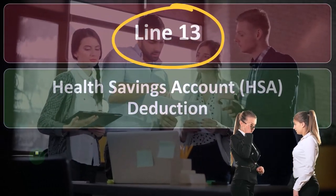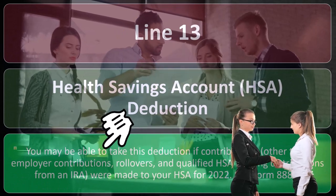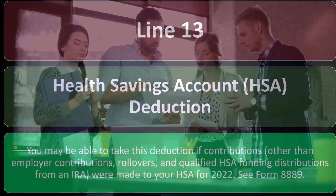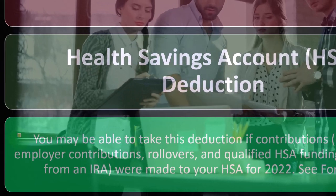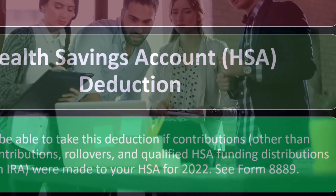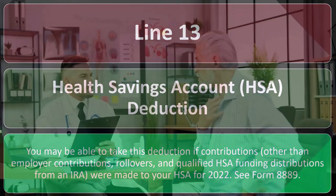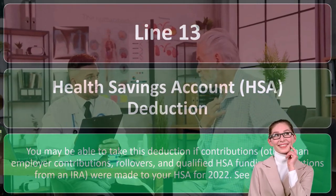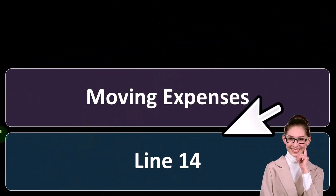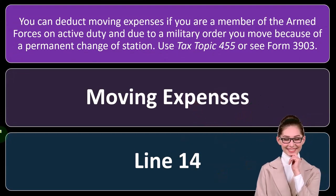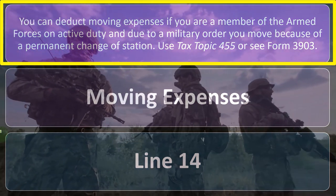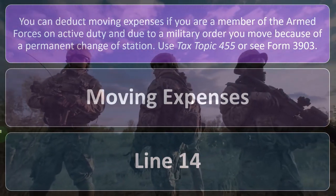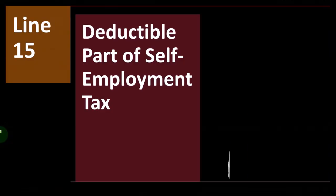Line 13 is the health savings account HSA deduction. You may be able to take this deduction if contributions — other than employer contributions, rollovers, and qualified HSA fundings — or distributions from an IRA were made to your HSA for 2022. If you have a health savings account set up, you can dive into more detail with Form 8889. Line 14 is moving expenses: you can deduct moving expenses if you are a member of the armed forces on active duty and moved due to a permanent change of station. See tax topic 455 or Form 3903 for more detail.